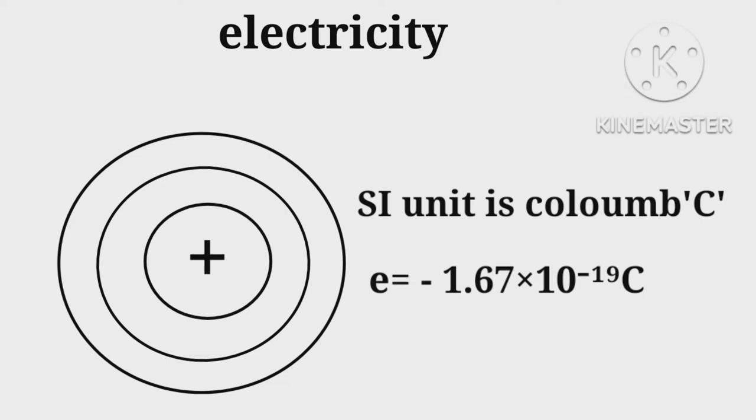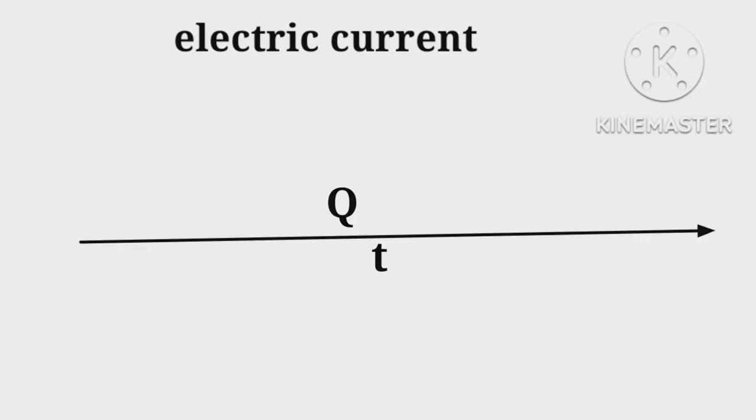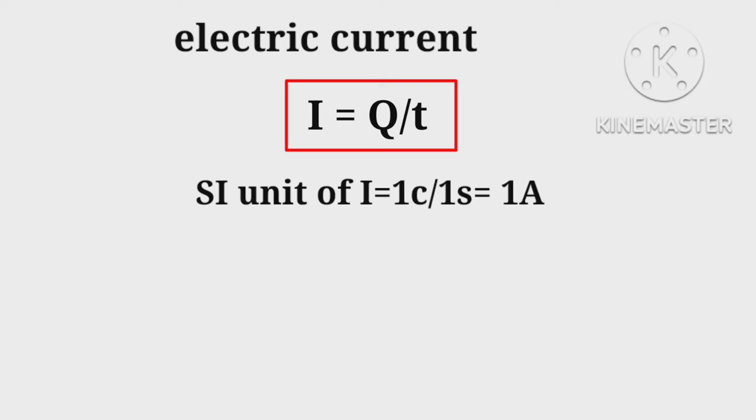Charge on an electron e = 1.67×10⁻¹⁹ coulombs. Rate of flow of charge is called electric current. If Q is the charge flowing through a wire and time taken is t, then current I = Q/t.